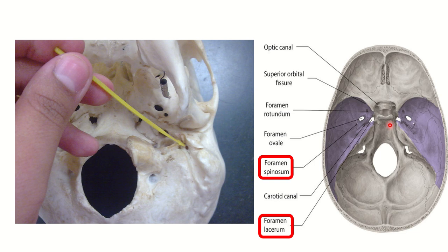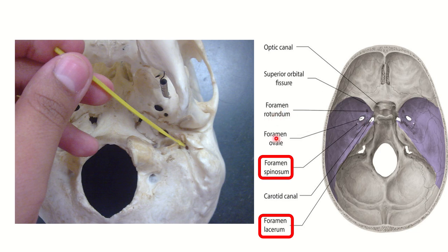Foramen lacerum is also visible here — the name means 'lacerated' because it has an irregular, torn appearance rather than a smooth edge. These foramina are present in the middle cranial fossa. In the anterior cranial fossa we can see the cribriform plate of the ethmoid. The pituitary fossa contains the pituitary gland, and in front of it are the two openings of the optic canal through which the optic nerves pass.